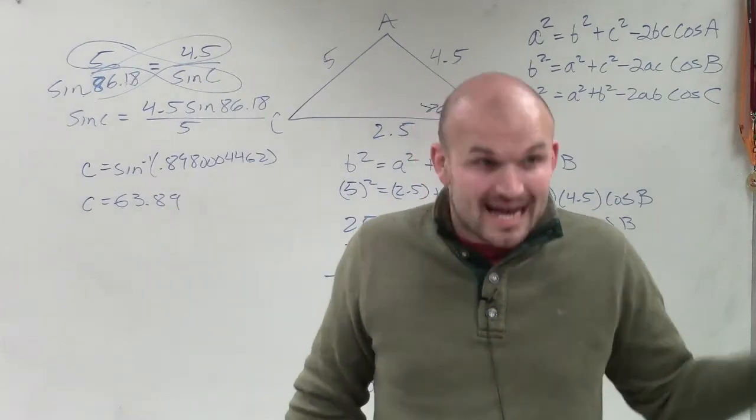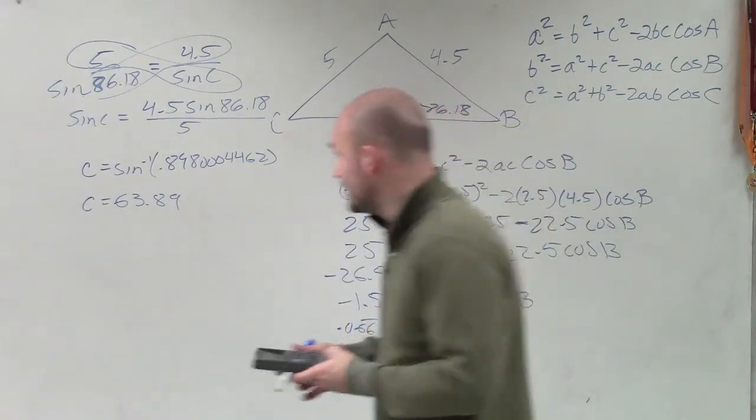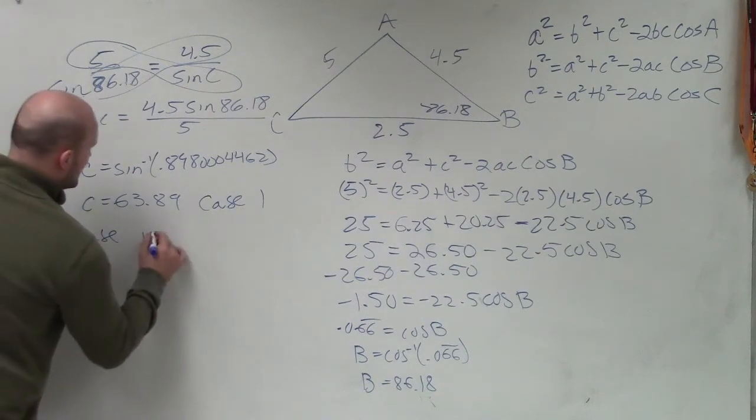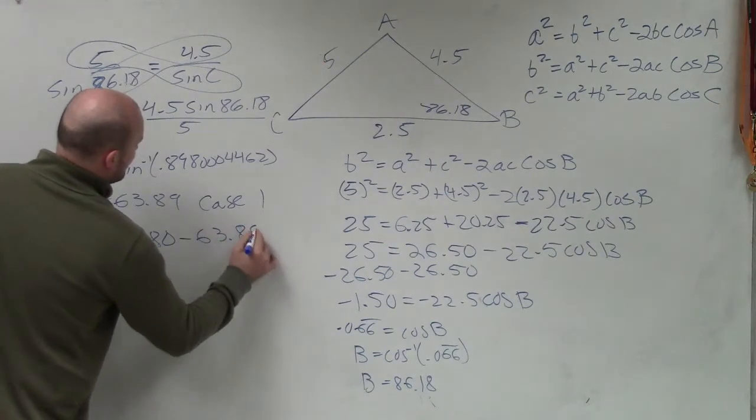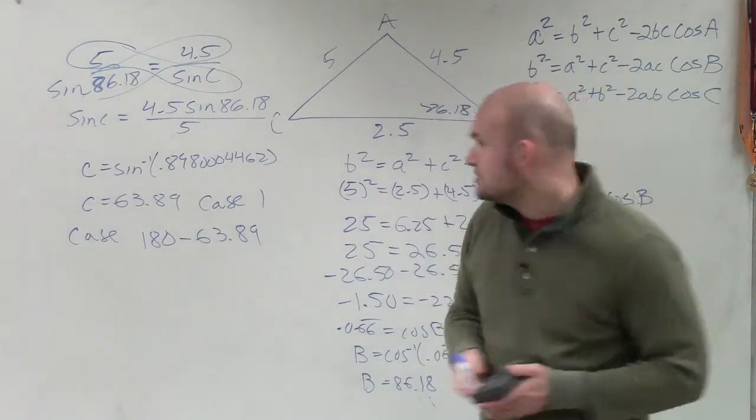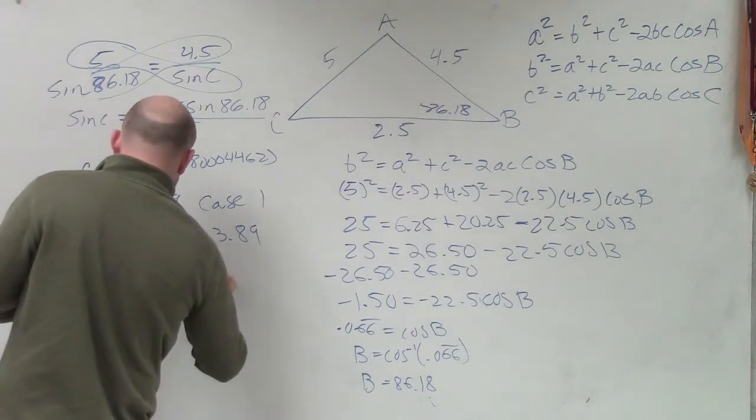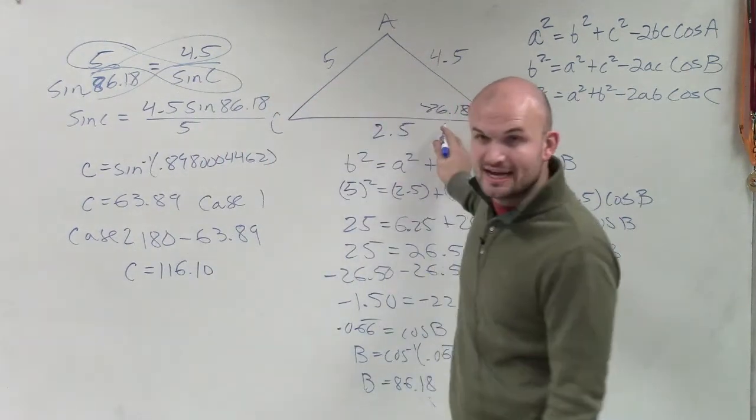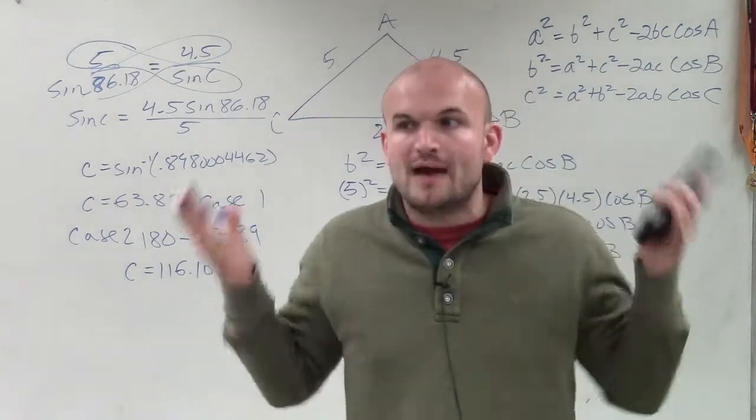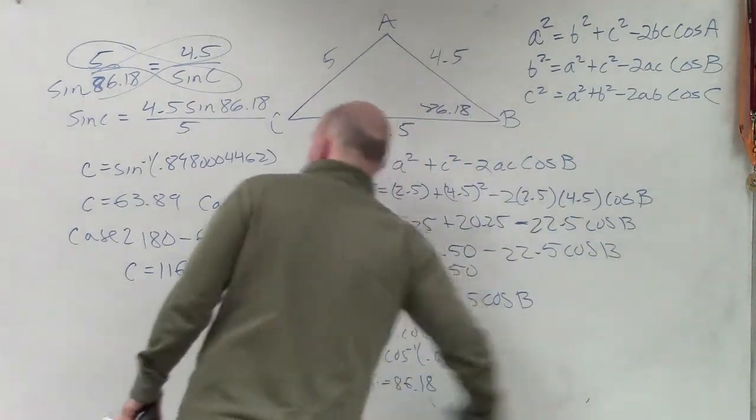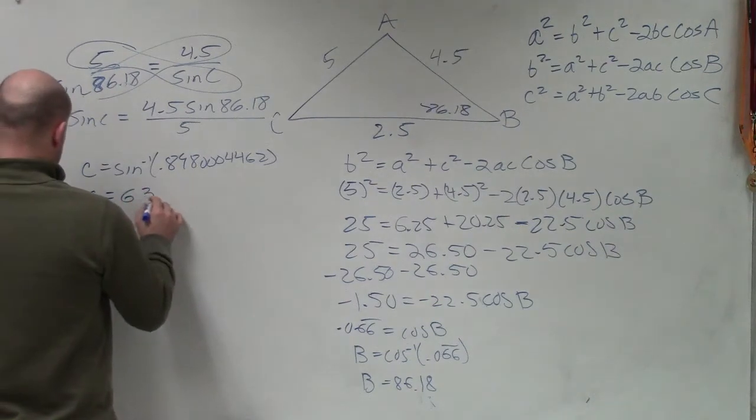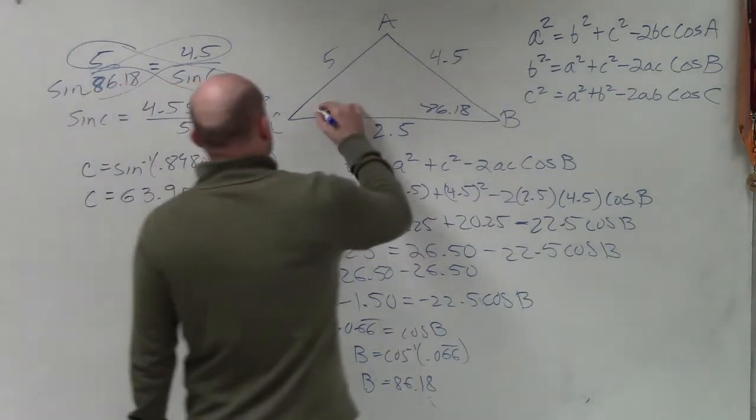Is it possible for it to have the obtuse? Yes, technically. So we need to figure out what that obtuse angle is. So that's case one. What about case two? For case two, we take 180° - 63.89. That could be the other possible angle. So I do 180 minus that answer, and I get 116. So for case two, my angle c = 116.10. Is it possible for c to be 116 if that's already 86? No. So therefore, we only have one case. But remember, when you are doing Law of Sines and you have only one acute angle, you have to check for two cases. But there's only one case, so we're good. So c = 63.90.